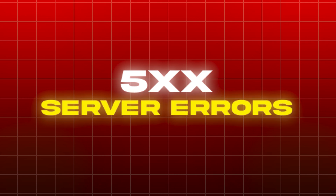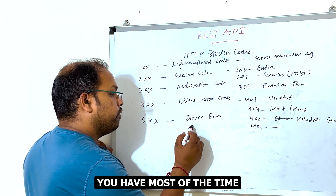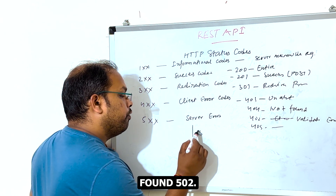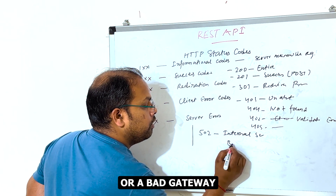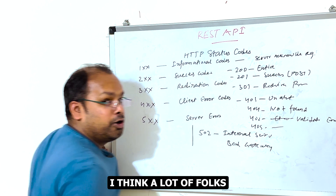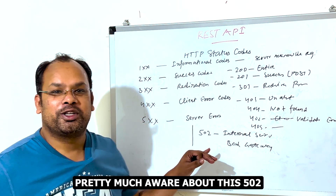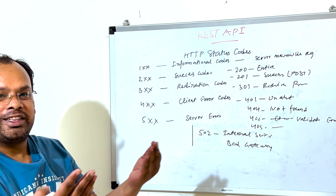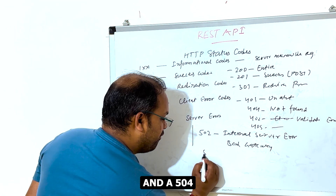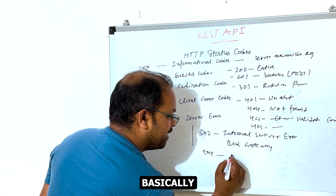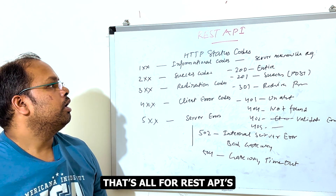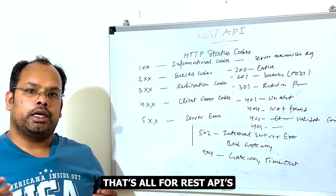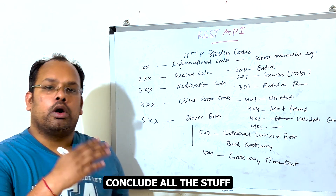The 5xx codes are server error codes. You've most likely encountered 502, which means Bad Gateway, and 504 which means Gateway Timeout. These are pretty common and most folks are aware of them.